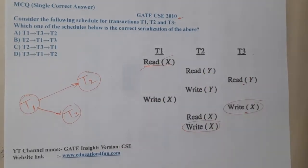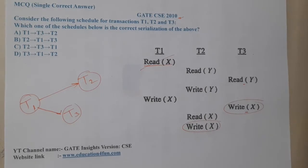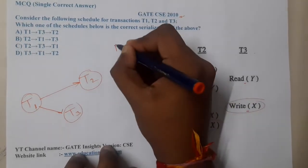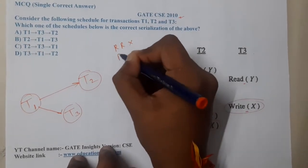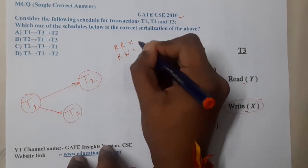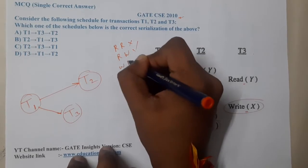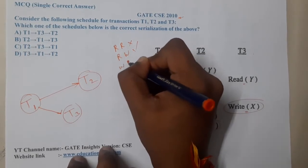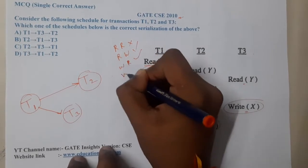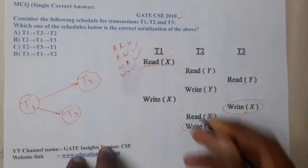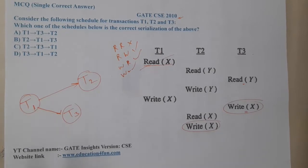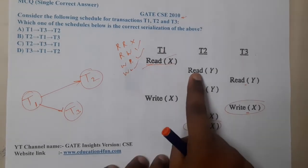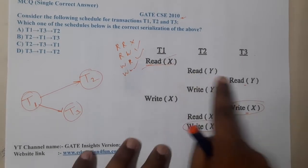Read-read operations will never have an issue. Read-write is an issue, write-read is an issue, and write-write is an issue. Whenever you see a write operation, it's a danger — that's it.